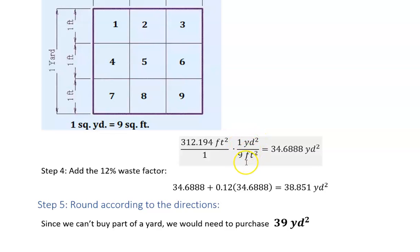That means this is really one I'm multiplying by one, but it looks different on the top and bottom so that my feet cancel, leaving yards behind. So I would take 312.194 and divide by nine essentially to get my square yardage, which is 34.688 square yards.